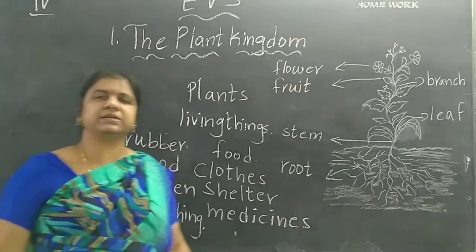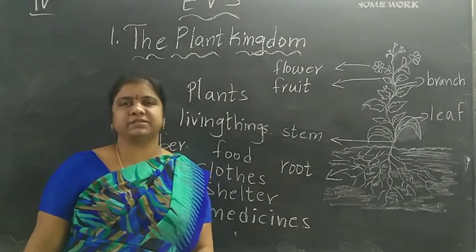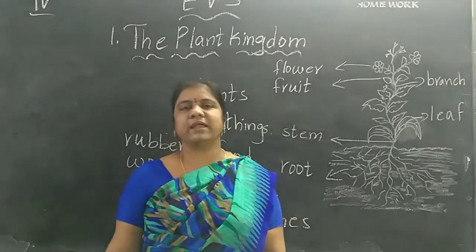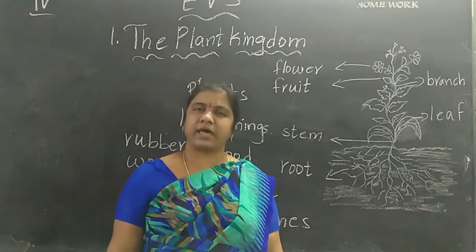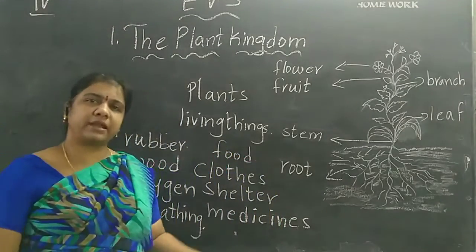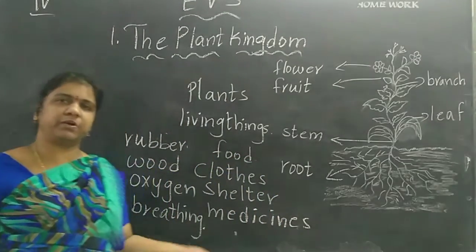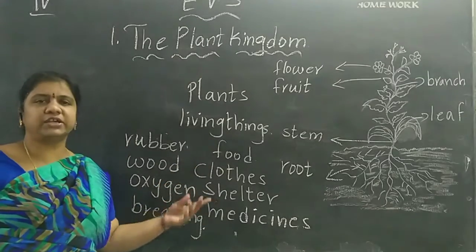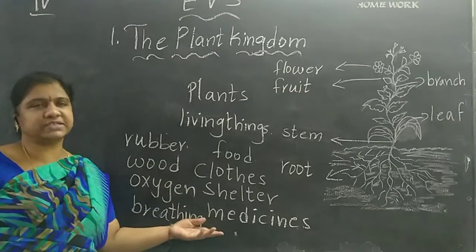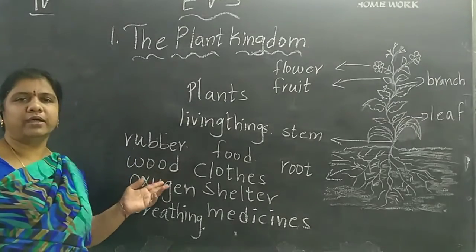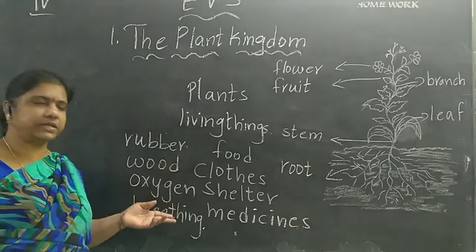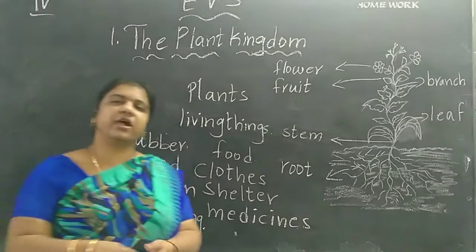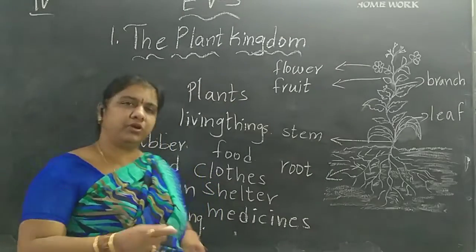Plants are one of the major living things and one of the major kingdoms. They are important to us as they provide different things like food, clothes, shelter, medicines, rubber, and oxygen for breathing.